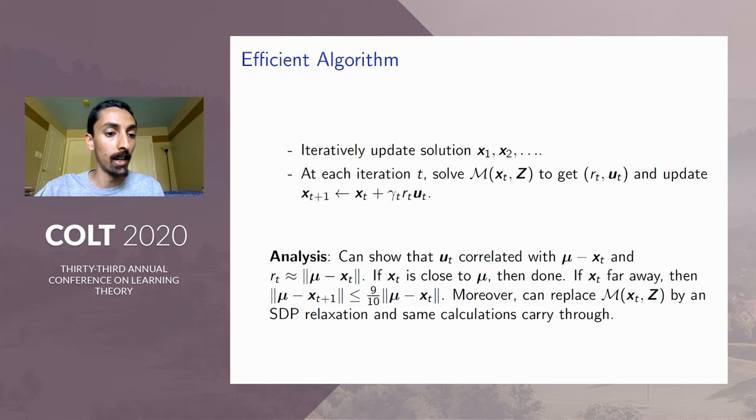So how do we analyze this algorithm? Cherapanam and Jerry et al. showed that basically this unit vector u_t is correlated with the direction of μ - x_t. So this is exactly the direction that tells us how to improve our guess. So u_t in some sense is a noisy estimate of the direction in which we want to move.